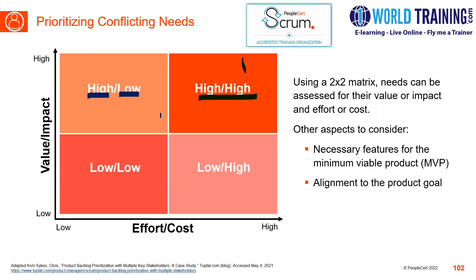Then we should think of elements which have higher impact and lower cost — that is the second priority. Next we look at low impact and low effort, and then low impact and high effort. That's how, if there are any conflicts, we resolve them in a way that addresses the highest impact items which can also result in the highest cost.